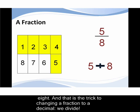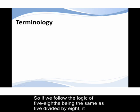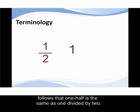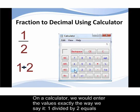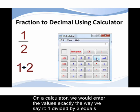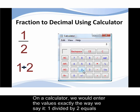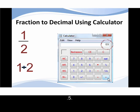So if you follow the logic of five eighths being the same as five divided by eight, it follows that one half is the same as one divided by two. On a calculator we would enter the values exactly the way we say it.